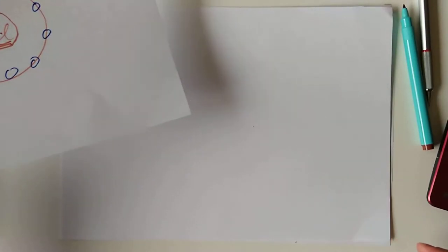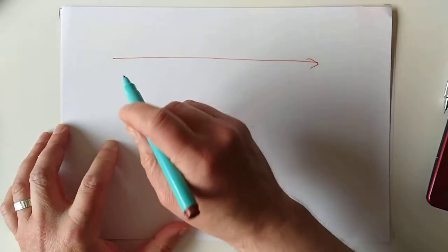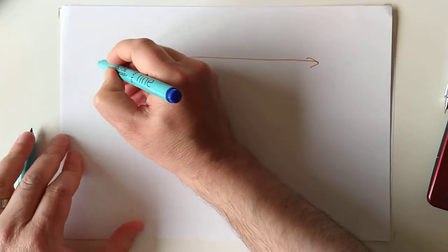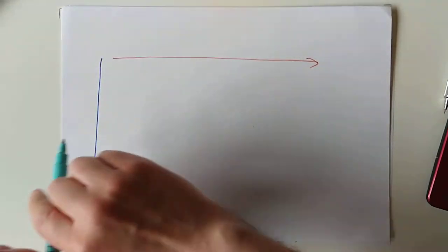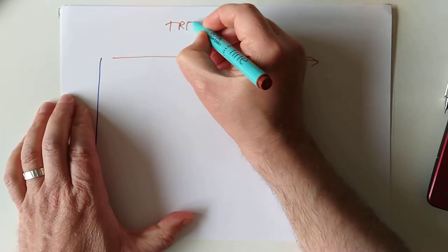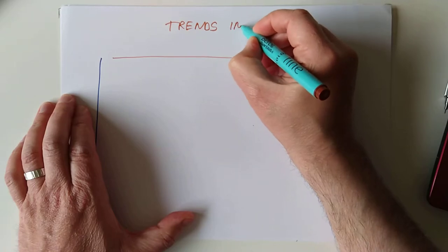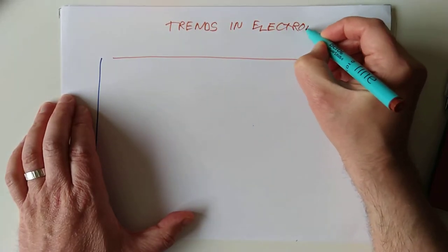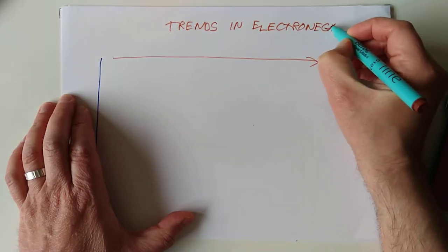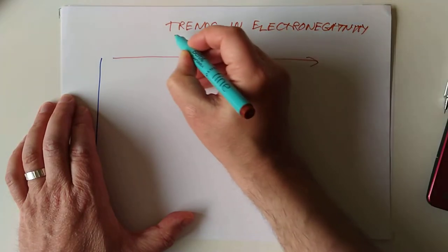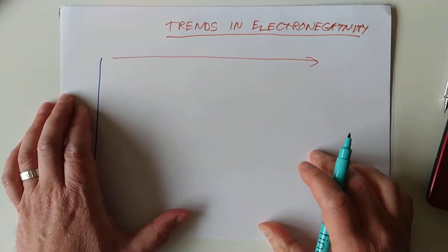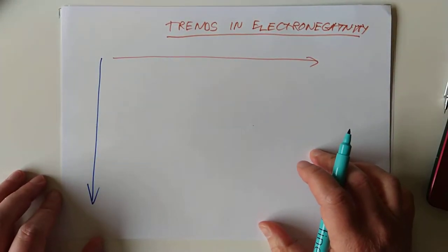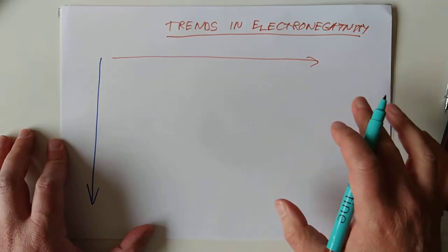So, just like before, we need to know the trends in electronegativity as you go from left to right and also as you go from top to bottom. So, our very last video in this triplet, trends in electronegativity. You know what the good news is? The good news is you'd probably be able to guess them because they're very, very similar to the trends that we've seen before.